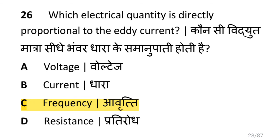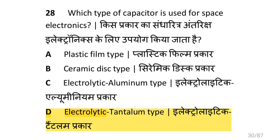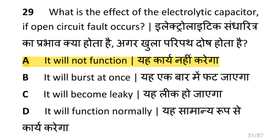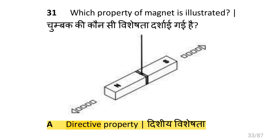Which is the diamagnetic substance? Water. What is the SI unit of flux density? That is Tesla. What does the shape of a BH curve hysteresis loop indicate? That is the magnetic properties of the material. Which electrical quantity is directly proportional to eddy currents? That is frequency. Which is the cause for changing the permeability? That is flux density. Which type of capacitor is used for space electronics? That is the electrolytic tantalum type. What is the effect on an electrolytic capacitor if an open-circuit fault occurs? It will not function.